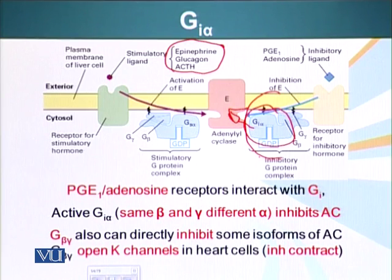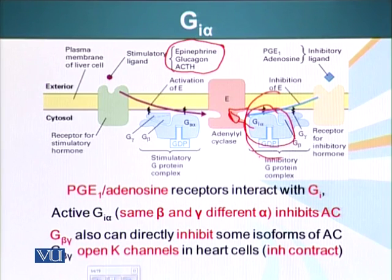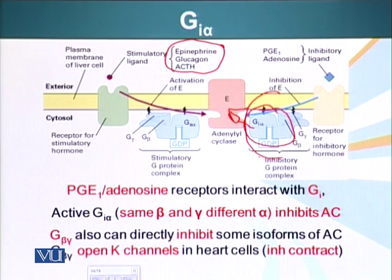Active GI-proteins have the same beta and gamma subunits but different alpha subunits. It's also worth mentioning that the beta and gamma subunits of G-proteins — some isoforms — can also inhibit some isoforms of adenyl cyclase. Additionally, beta and gamma subunits can open calcium channels in heart cells and inhibit contraction.